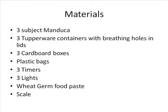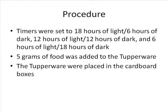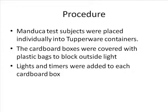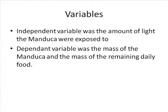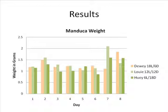The materials listed were used in this experiment. Our three Manduca test subjects were Dewey, with 18 hours of light and 6 hours of dark; Louie, at an even 12 hours of light and dark; and finally Huey, at 6 hours of light and 18 hours of dark. Each of the test subjects were individually monitored and cared for, as shown here. The independent variable in the study was the amount of light each subject was exposed to daily. The dependent variables analyzed were the weight of the Manduca and the weight of their food left over each day.